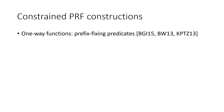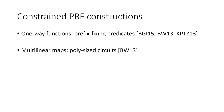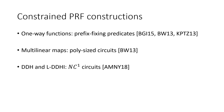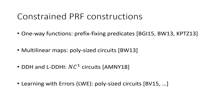Constrained PRFs have been built based on various assumptions. The first three works used one-way functions for prefix-fixing predicates. Boneh and Waters used multilinear maps for polynomial-size circuits. Attrapadung and others used DDH-type assumptions in pairing-free groups to support all NC1 circuits. Most relevant to this work, Brakerski and Vaikuntanathan used the learning with errors assumption to build constrained PRFs for polynomial-size circuits; this BV15 construction inspired many subsequent lattice-based works.